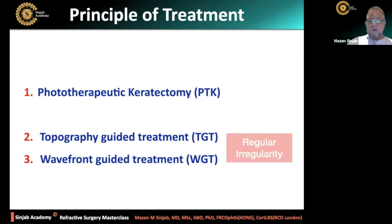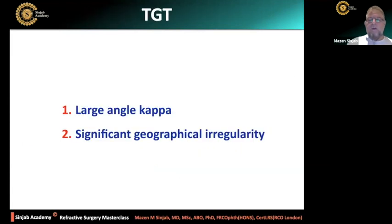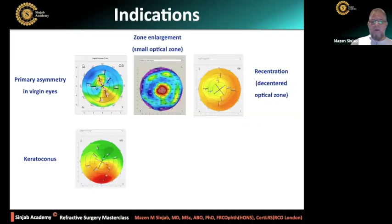Now we come to topography-guided treatment and wavefront-guided treatment — these are just for regular irregularity. Topography-guided treatment is indicated when there is a large angle kappa, because it compensates for angle kappa. It takes care of the visual axis, and use it when there is significant geographical irregularity.